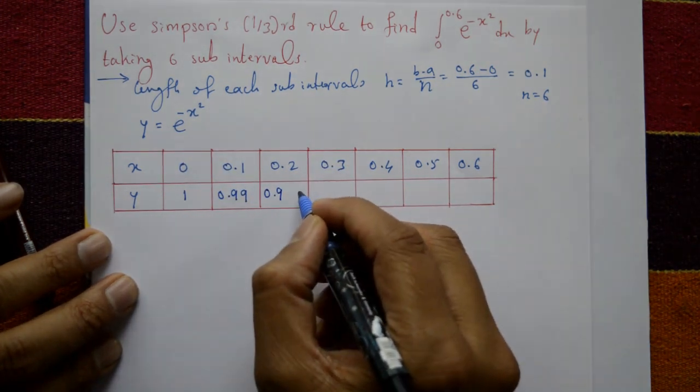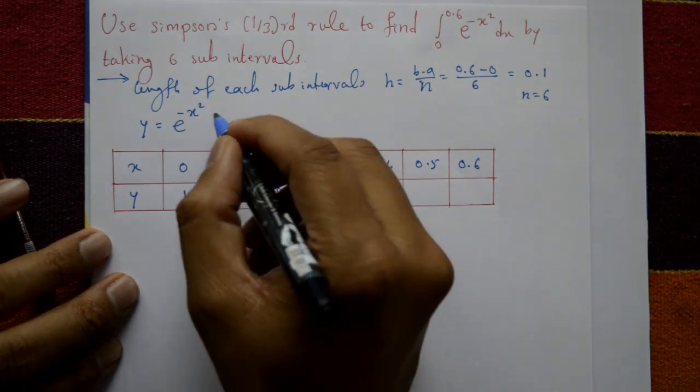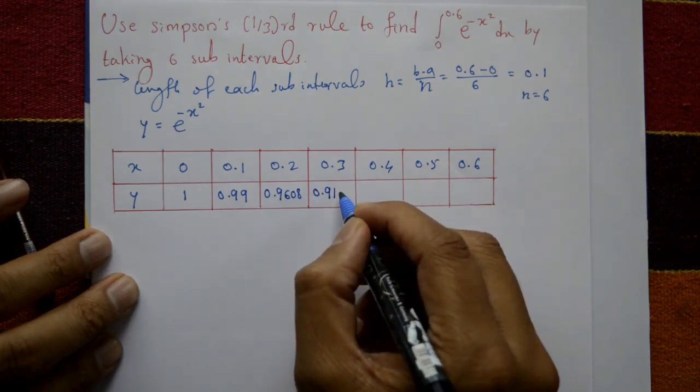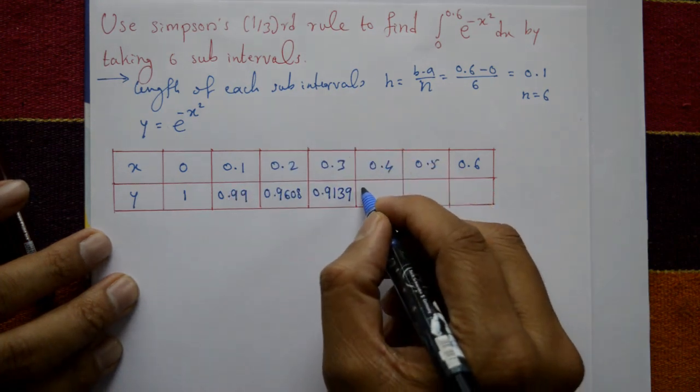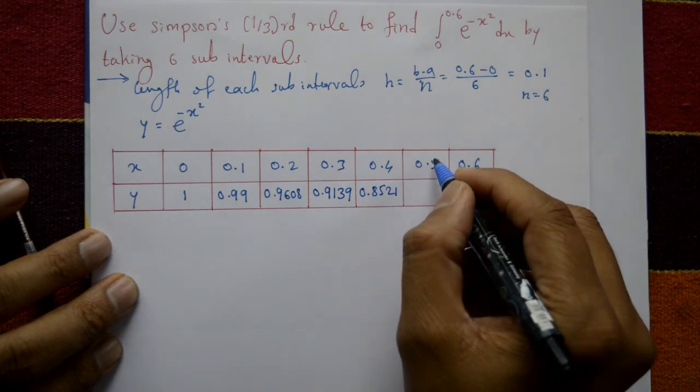x = 0.3 gives 0.9139. Next, x = 0.4 gives 0.8522.